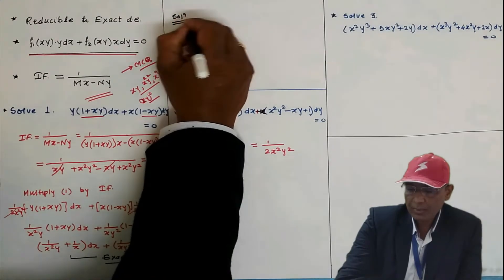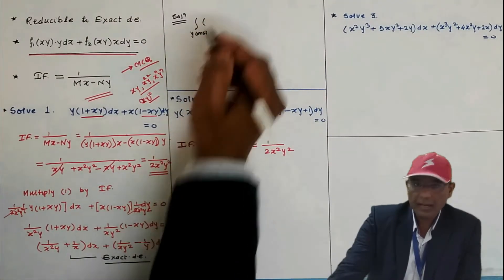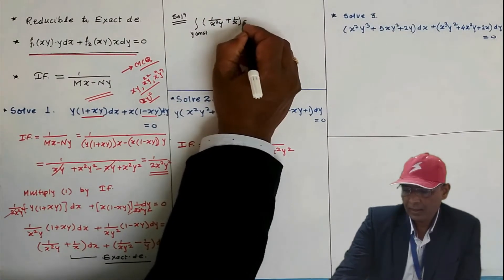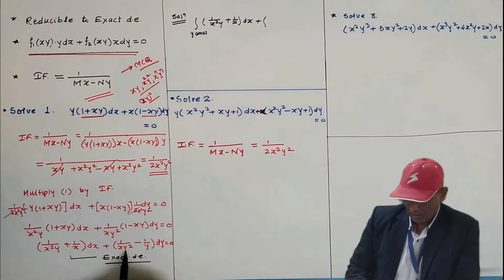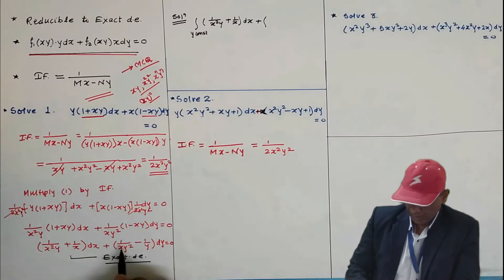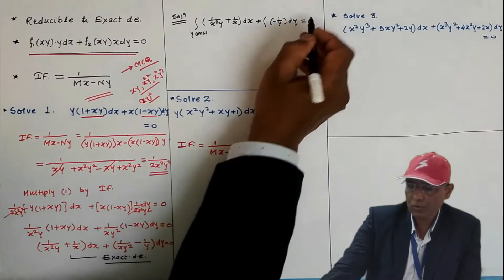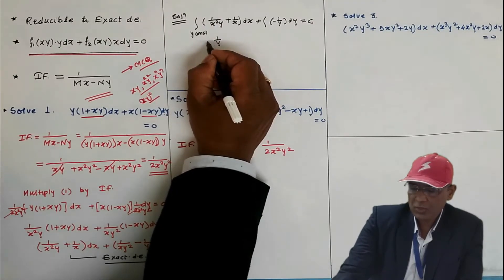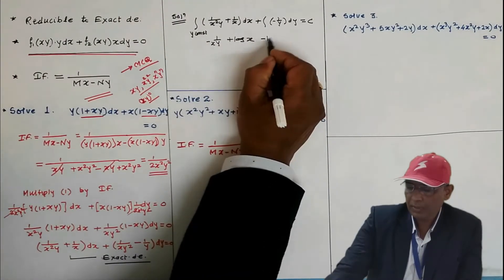After multiplying by the integrating factor, the resulting equation is exact. The solution of an exact differential equation is: integral of M with respect to x (keeping y constant) plus the terms in N which are free from x, equals c. Integral of 1/x² is −1/x, integral of 1/x is log x, and integral of 1/y with respect to y is log y.